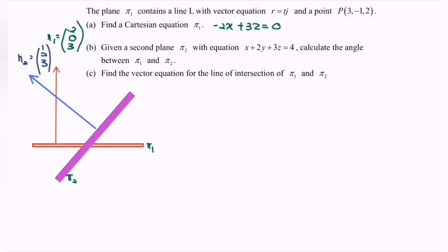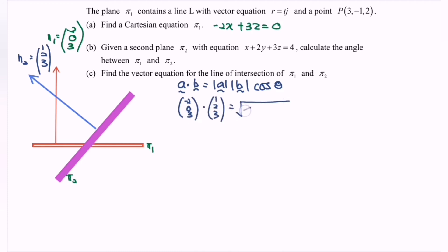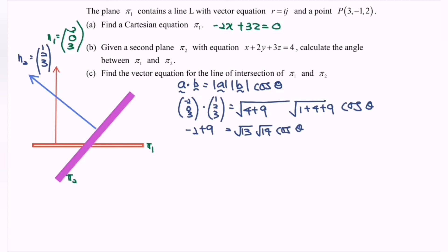To find the angle between planes pi 1 and pi 2, use a dot b equals |a||b| cos θ. Substituting: (-2, 0, 3) dot (1, 2, 3) equals √(4+9) times √(1+4+9) times cos θ. Expanding: -2 + 0 + 9 = √13 times √14 times cos θ, so 7 = √13 × √14 cos θ. Therefore cos θ = 7 / √(13×14), giving θ = 58.74°.